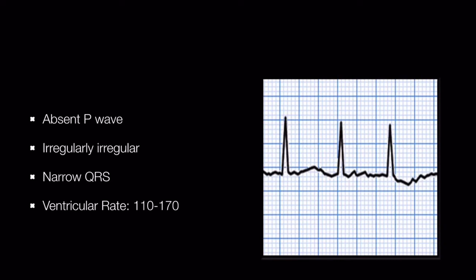Coming to the ECG findings in atrial fibrillation, the most important findings are: one, absent P-wave; two, irregularly irregular QRS complexes that are narrow; and a ventricular rate of 110 to 170 per minute, though there are exceptions.